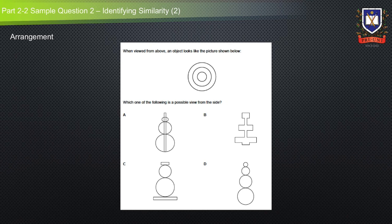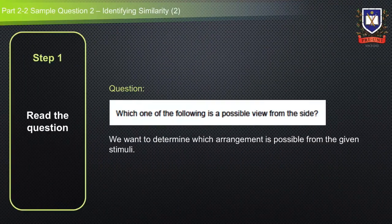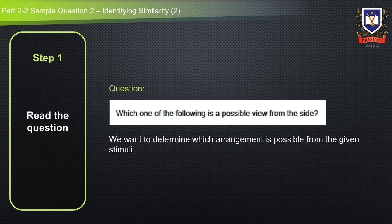Now let's apply the general method to solve this question. The first step is to read the question and determine what it is asking. Since it is asking which one of the following is a possible view from the side, we want to determine which arrangement is possible from the given stimuli.